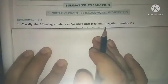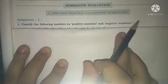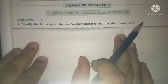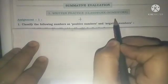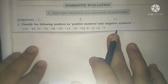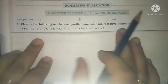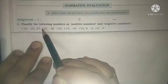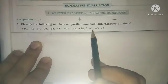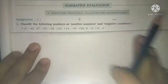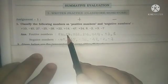The first question says: classify the following numbers as positive numbers and negative numbers. They are asking us to classify the given numbers — positive numbers denoted by plus sign and negative numbers denoted by minus sign. The numbers given are: plus 10, minus 45, 27, minus 25, minus 38, plus 22, plus 14, minus 47, plus 24, 8, 2, minus 3.